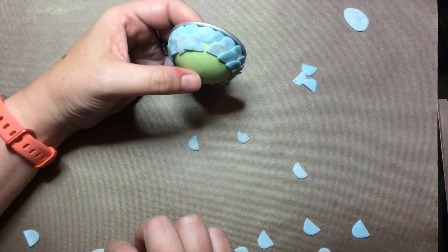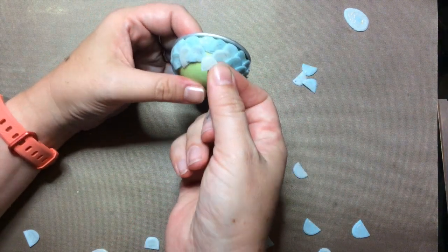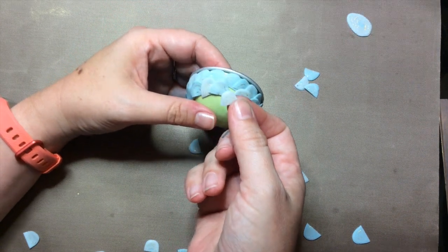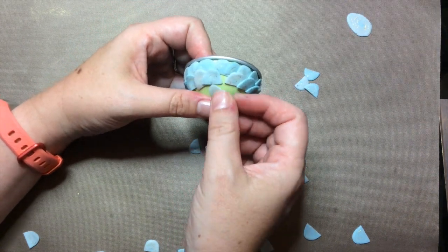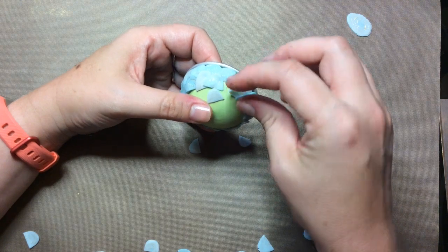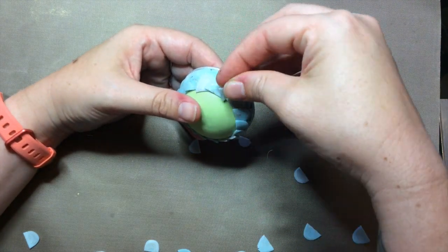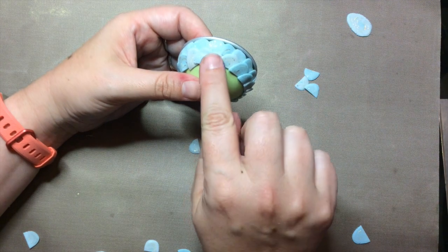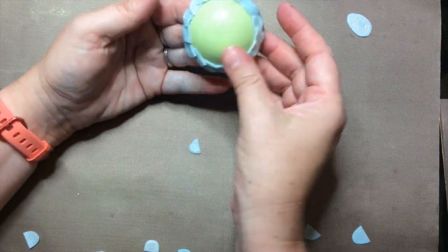And again, I'm coming to the end of a row and I'm going to pick one that's a little bit smaller. And I'm going to lift this one up and slide this one under so that you can't really tell where my row ends.